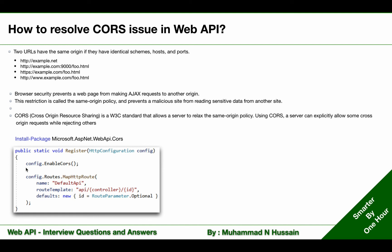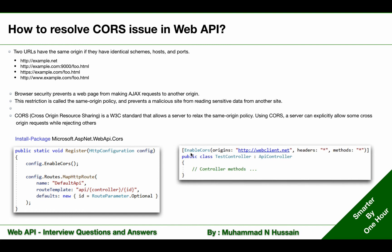The second step is enabling CORS in the Register method, as shown here. The third and last step is using the EnableCors attribute. As you can see, I'm applying the EnableCors attribute at the controller level, and the origins parameter holds the URLs we want to allow.